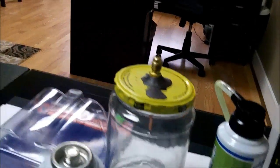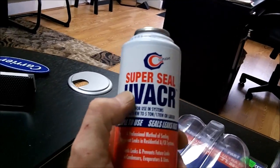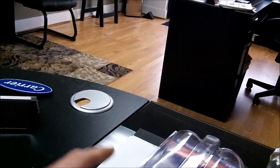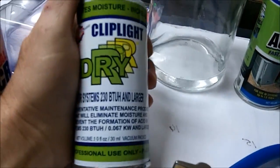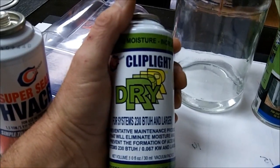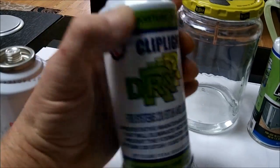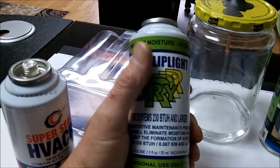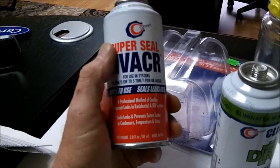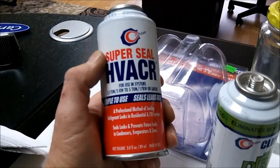This stuff here, when it hits moisture, it actually hardens, hence the water in the jar. That's why I'm going to add the dryer in the system first, and then once I add that, then I will go ahead and put the Cliplight Super Seal in there.